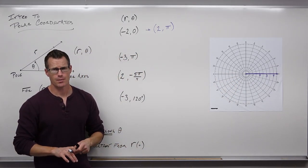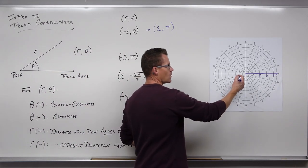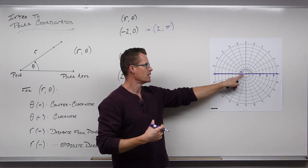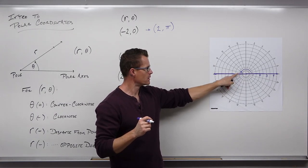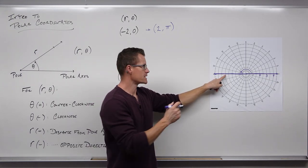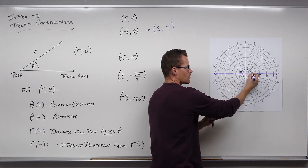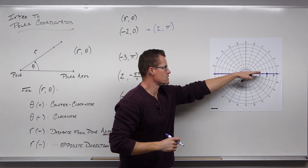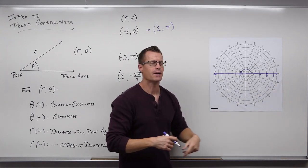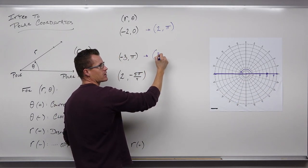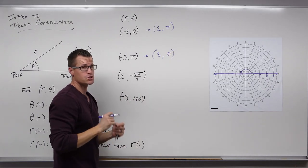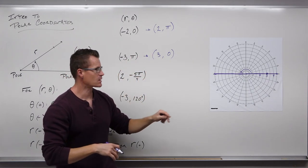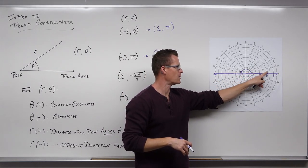How about negative 3 comma pi? Use your angle first. Pi says we're going all the way to here — pi radians from the polar axis. We've gone an angle of pi. If we had positive 3, it would be 1, 2, 3 along that ray. Negative 3 says at this point you're just going to reflect this — so 1, 2, 3, we'd actually end up right here on the positive side. So negative 3 comma pi means go to pi and then reflect in the opposite direction. You can verify: change to positive 3, subtract pi, gives angle 0, and going out 3 units is exactly the same point.